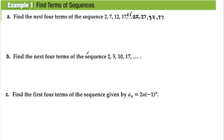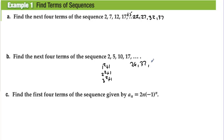Letter B: Find the next four terms of the sequence 2, 5, 10, 17. This sequence follows the pattern of perfect squares plus 1 — for example, 1 squared plus 1, 2 squared plus 1, 3 squared plus 1. The next four terms would be 4 squared plus 1, 5 squared plus 1 equals 26, 6 squared plus 1 equals 37, then 50 and 65.